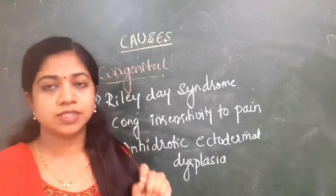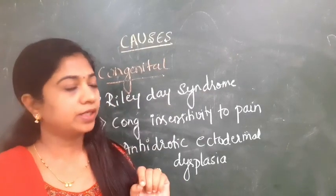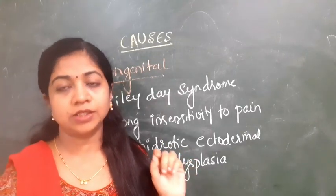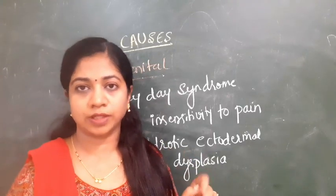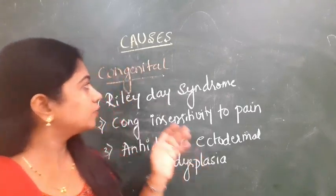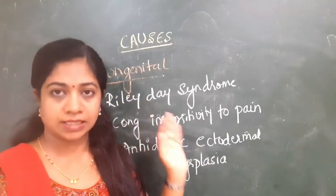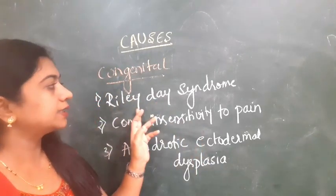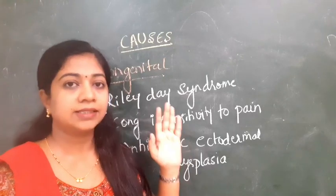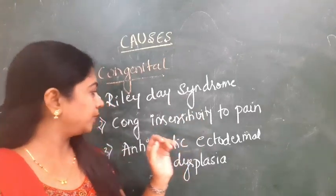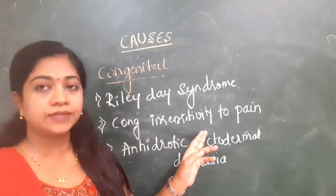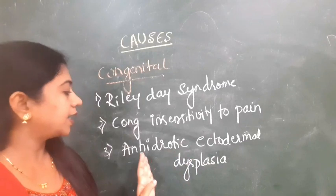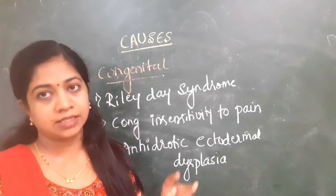Coming to the causes of this neurotrophic corneal ulcer — frequently asked as a three-mark question. We have congenital causes as well as acquired causes. In the congenital category: Riley-Day syndrome, congenital insensitivity to pain, and anhidrotic ectodermal dysplasia. These three are the congenital causes for trophic corneal ulcer.